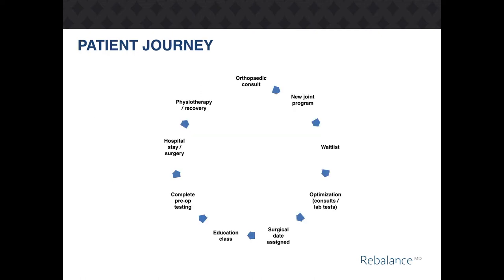The patient journey includes nine steps. It begins with the orthopedic consult, assessment in the new joint program, placement on the surgical waitlist, then optimization of consults and laboratory tests, assignment of a surgical date, placement to an education class, finalization of preoperative testing, then the hospital stay and surgery, followed by postoperative physical therapy and recovery.